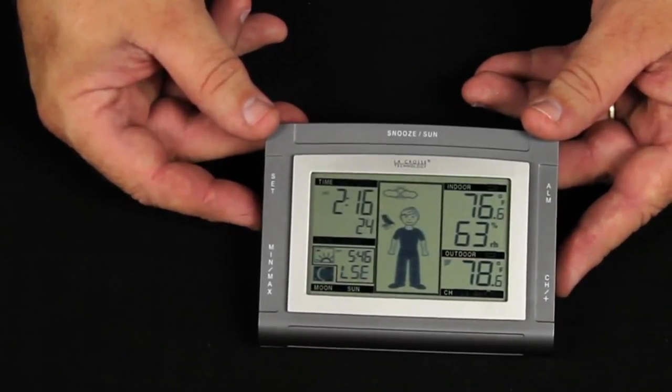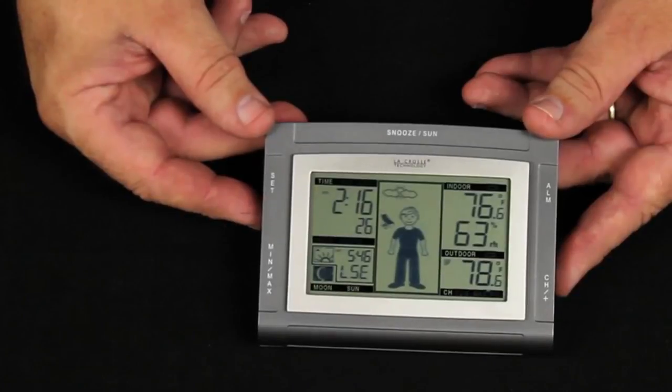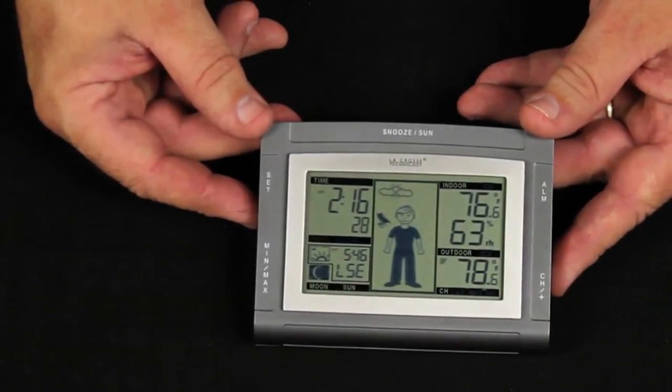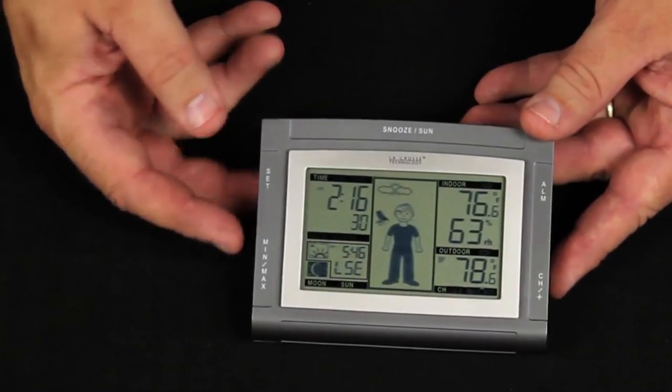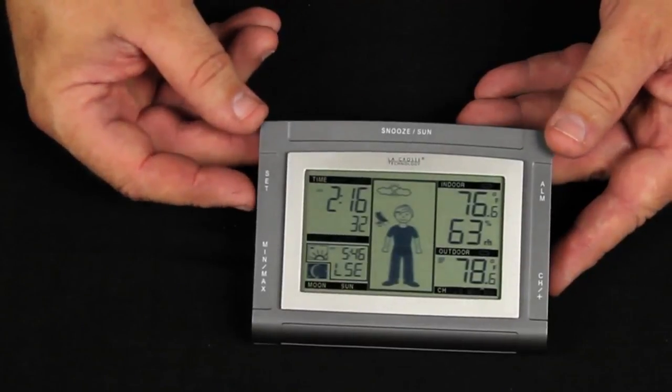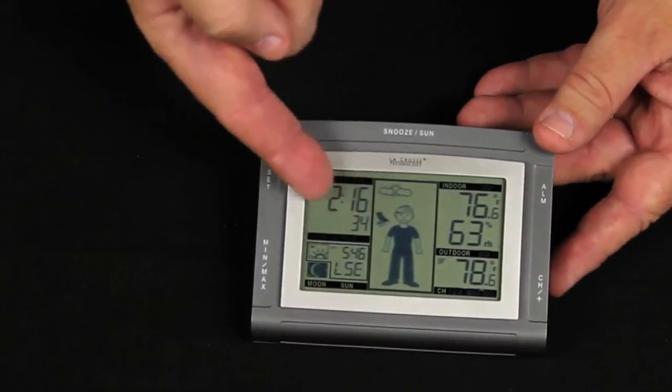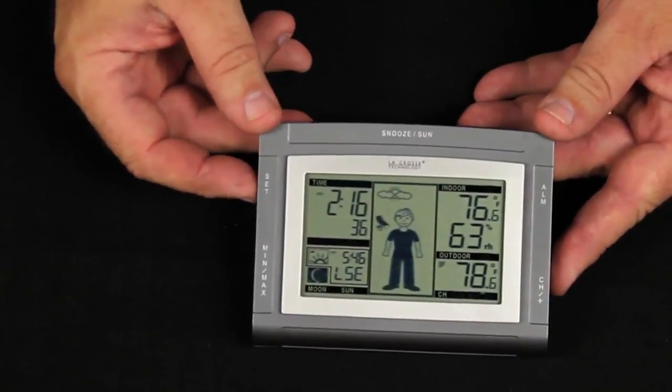Pressing the set button once again takes me back to my normal situation. There are a number of other settings we can do. Notice that I have the time and seconds counting. The set button controls how this portion of the display looks by pressing it again.